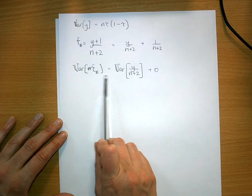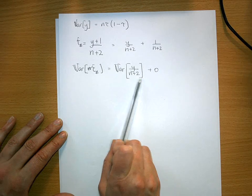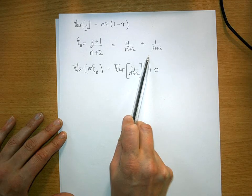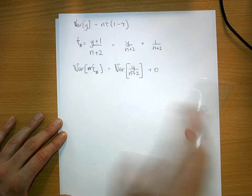The variance of tau-hat-beta, the Bayesian estimator, is the variance of that - well, the variance of this bit here is 0, so just send it straight to 0.